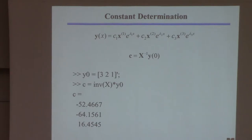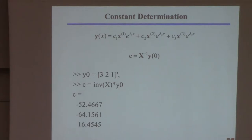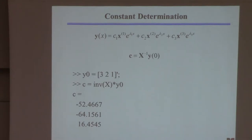If we want to find the constants, Y of zero equals C1·X1 plus C2·X2 plus C3·X3 — this is the modal matrix X times the vector C equaling Y of zero. That means Z zero equals X inverse times Y zero.